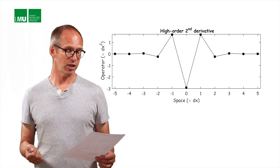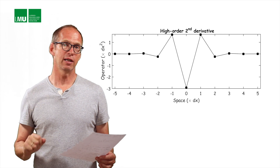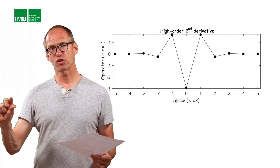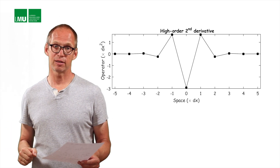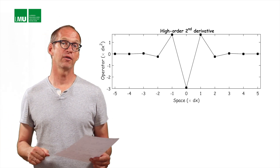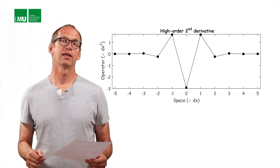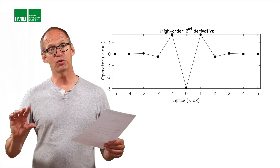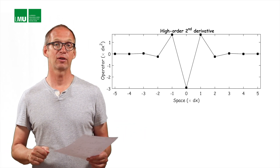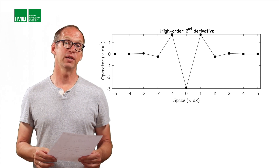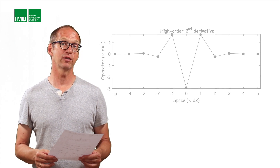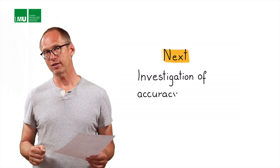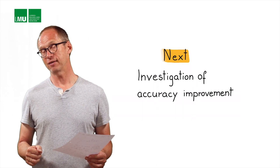Whether that is useful, we will discuss later. But there is one important observation: the actual weights with which we multiply the functional values away from the central point get smaller and smaller. That is a characteristic of these Taylor operators, and it is questionable whether it makes sense to use the information from points far from the central point. We will investigate the accuracy improvement with our Python codes.